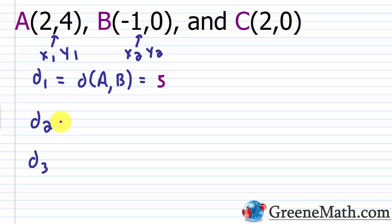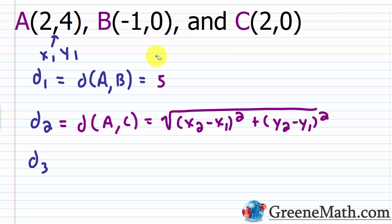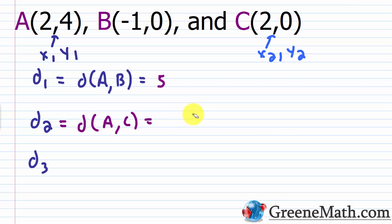Now for distance 2, the distance between A and C. Using the distance formula: x₂ = 2, x₁ = 2, so 2 − 2 = 0, and 0 squared is 0. Then y₂ = 0, y₁ = 4, so 0 − 4 = −4; −4 squared is 16. The square root of 16 is 4. So the distance between A and C is 4.